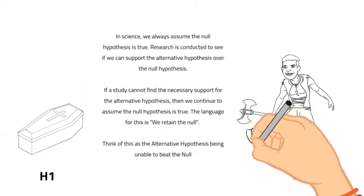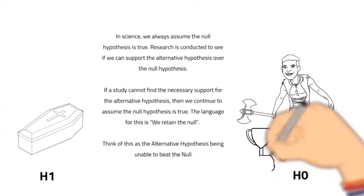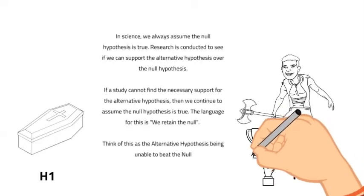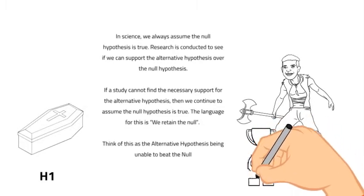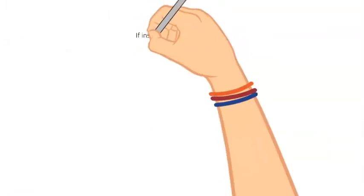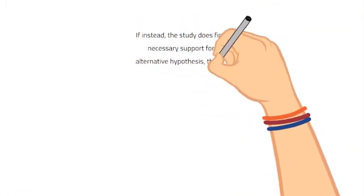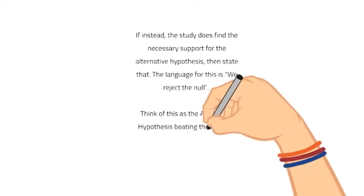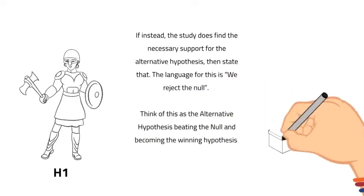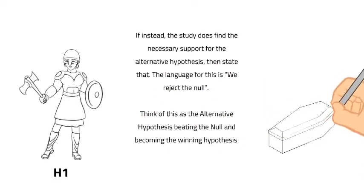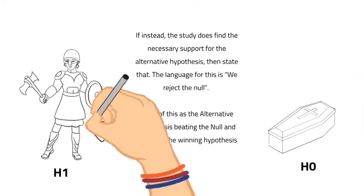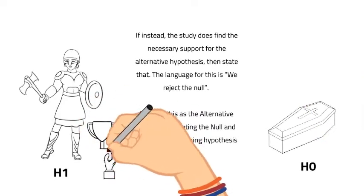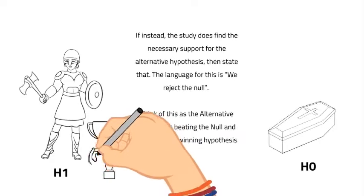Think of this as the alternative hypothesis being unable to beat the null — the null is the winning hypothesis, so it's the one we go with. If instead our research study does find the necessary support for the alternative hypothesis, then we state that. The language we use is we reject the null. Think of this as the alternative hypothesis beating the null hypothesis and becoming the winning hypothesis.